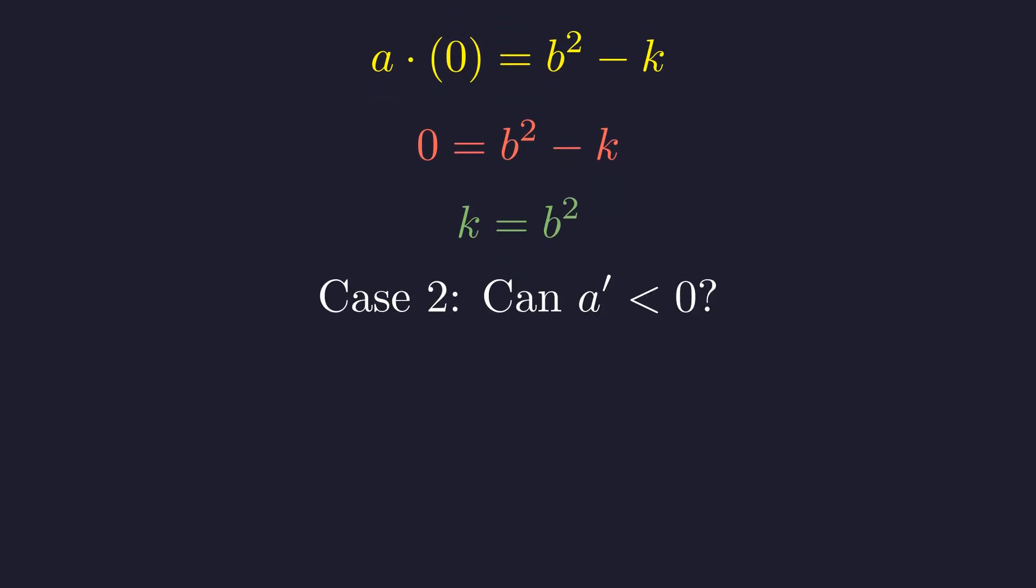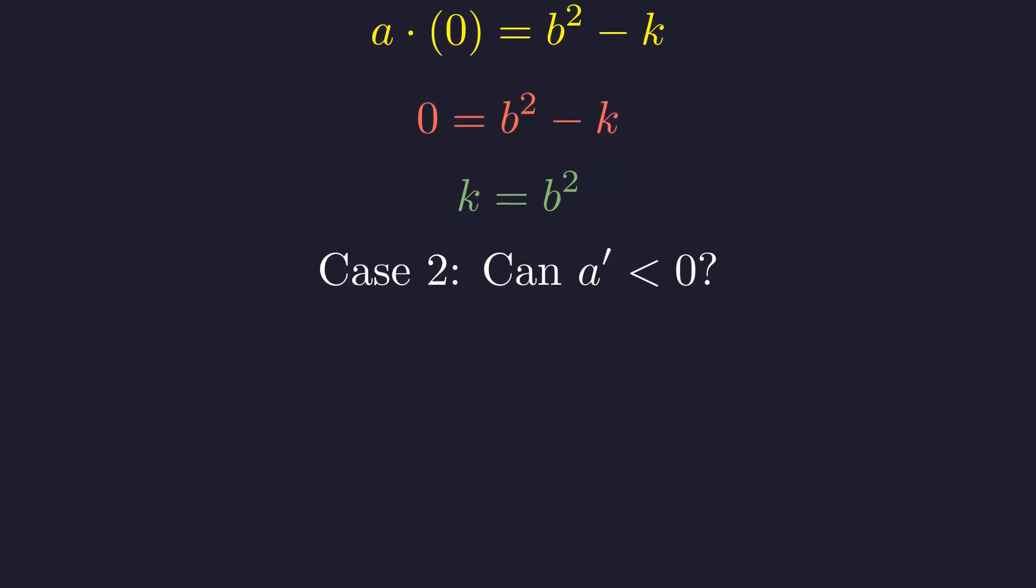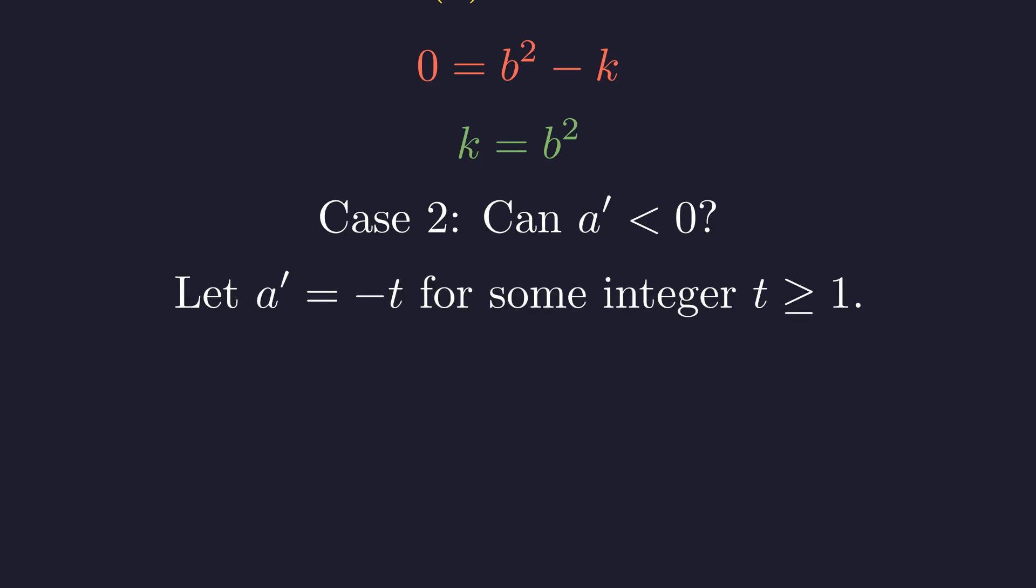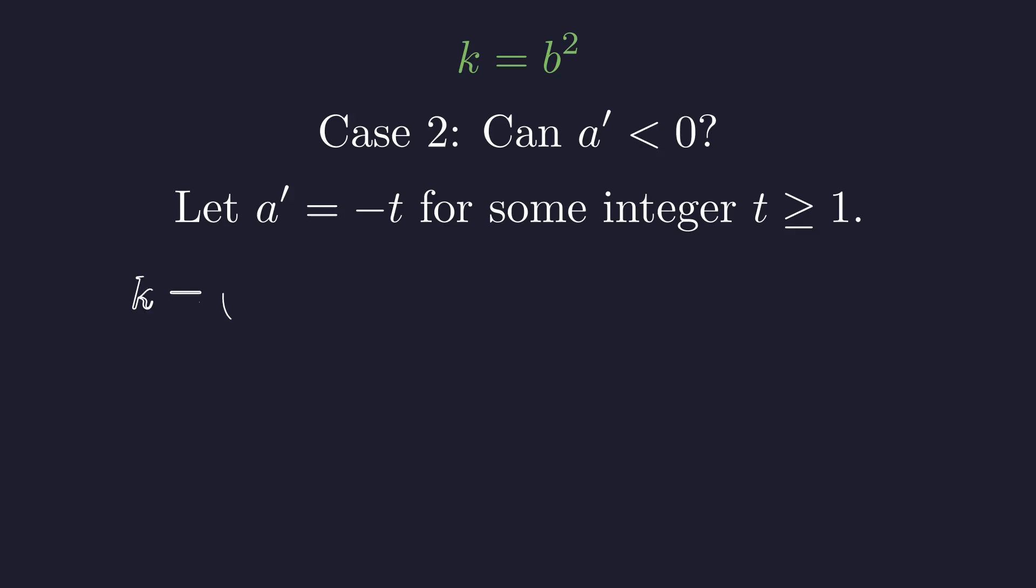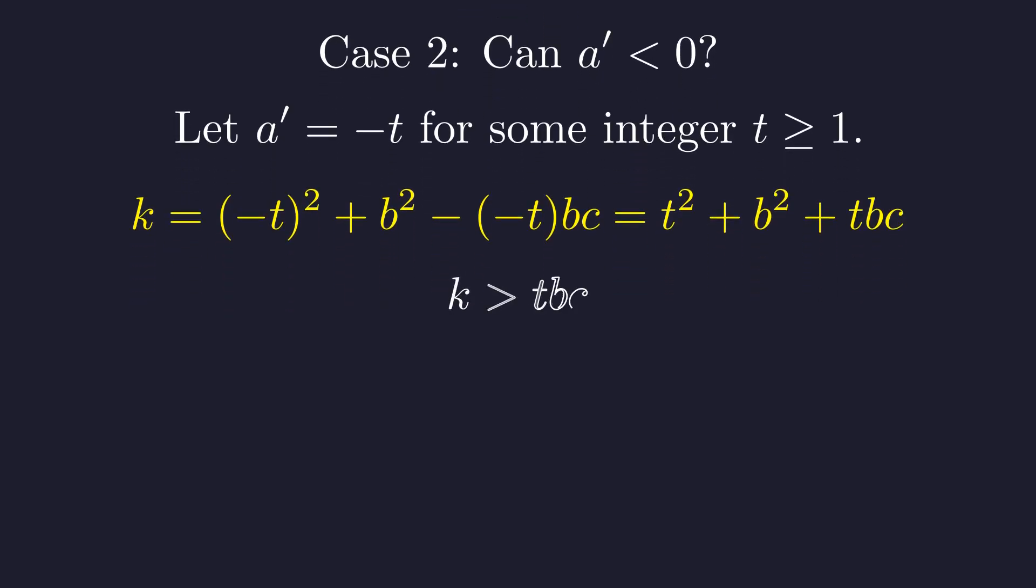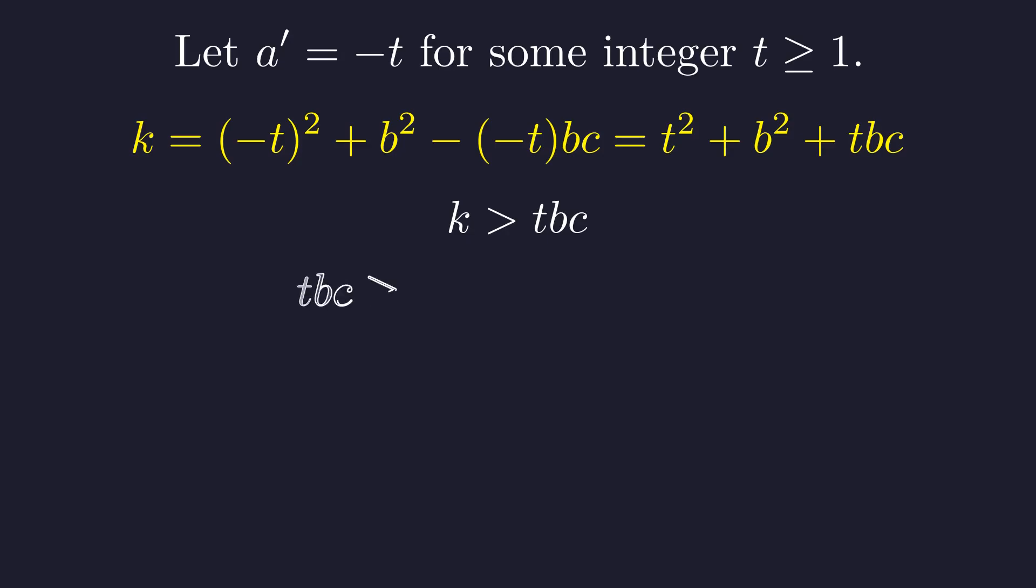Next, let's test whether a prime can be negative. Let's write a prime as negative t where t is a positive integer. Substituting this into the original relation for k, we see all terms are positive. Since t and b are positive integers, t squared plus b squared is strictly positive. This means k must be strictly greater than the remaining term. And since t is at least 1, this remaining term is at least b times c.